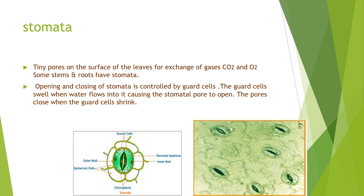Stomata are tiny pores present on the surface of the leaves which exchange carbon dioxide and oxygen. They are sometimes present on the roots and also the stems. A very important factor is that plants try to hide their stomata because through stomata there is a tendency of water loss from the plants. So in plants, the stomata are usually hidden or shrunken, and are more present on the lower epidermis of the leaf so the leaf doesn't lose excess water into the atmosphere.